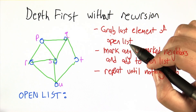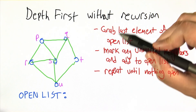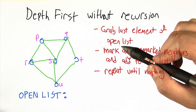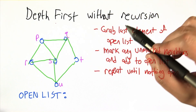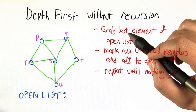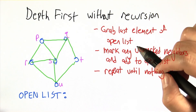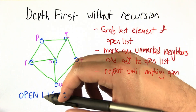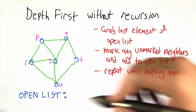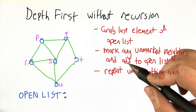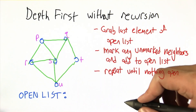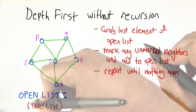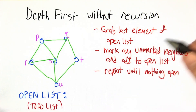As a step towards being able to do that, let's redo depth-first search, just the way it was done before, but this time without recursion. The way we're going to make that work is by introducing a new data structure called the open list. The open list I like to think of as a kind of to-do list, because it keeps track of what I need to do next.